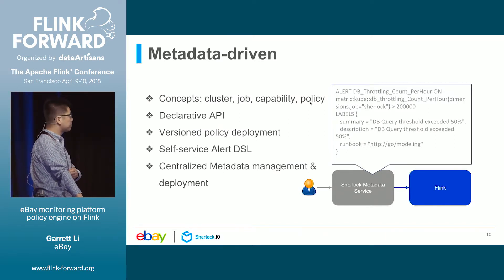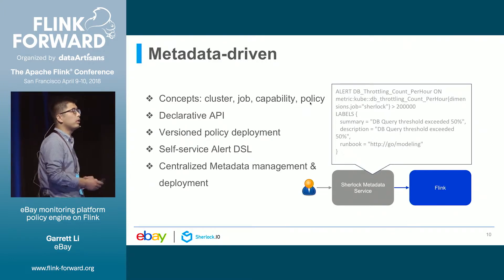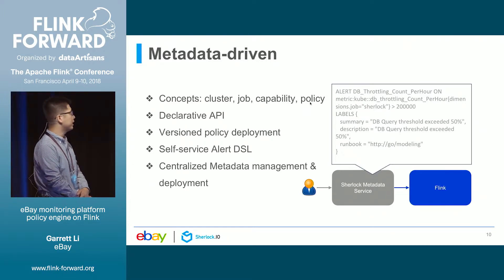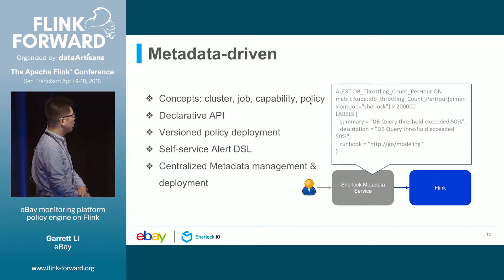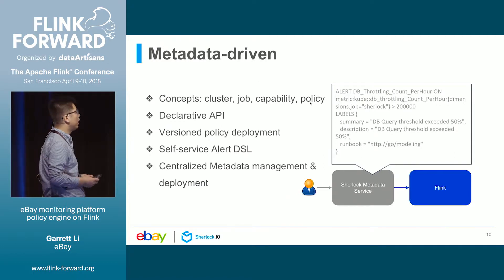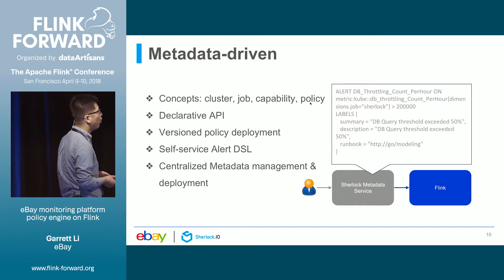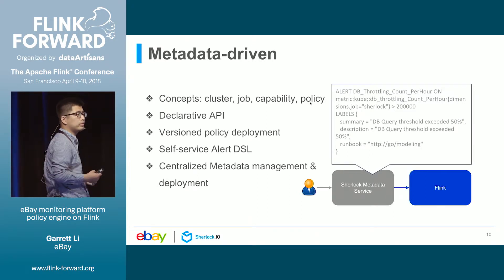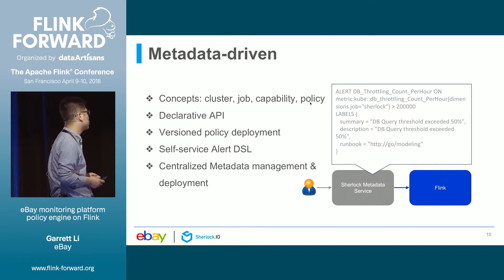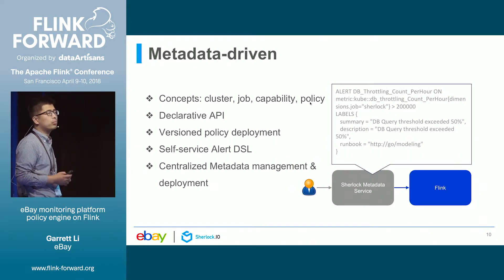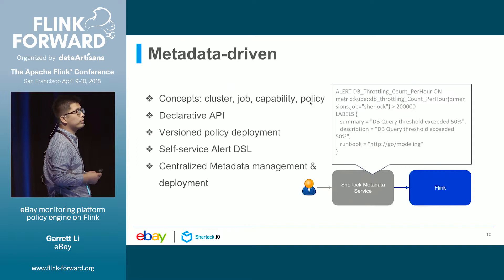We also have versioned policy deployment. Once new policies get deployed, we generate a unique version ID and notify the Flink adapter of the policy change. The Flink adapter gets notified through ZooKeeper and makes an RPC call to the metadata service to get the latest metadata, and then applies it in the Flink job. Our policy deployment does not require a Flink job restart.